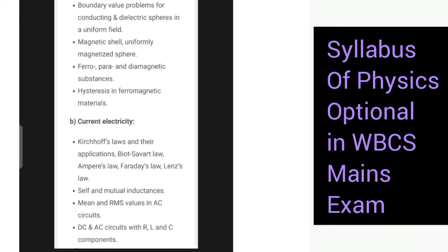Next we have this portion on boundary value problems for conducting and dielectric spheres in uniform field. Magnetic shell, uniformly magnetized sphere, ferro, para, diamagnetic substances, hysteresis in ferromagnetic materials. Then we have current electricity.